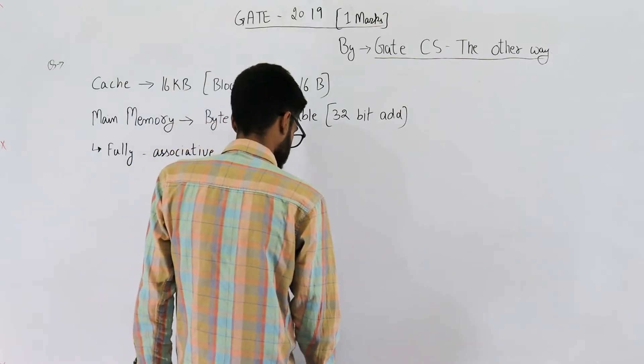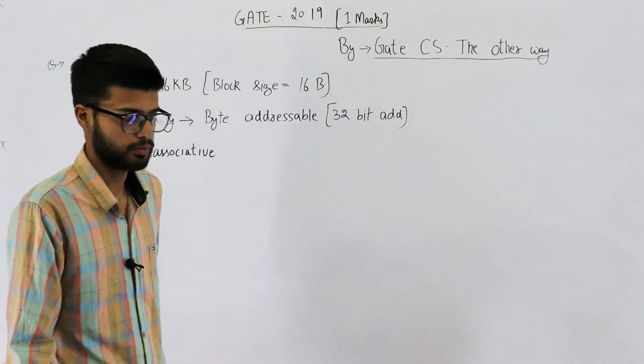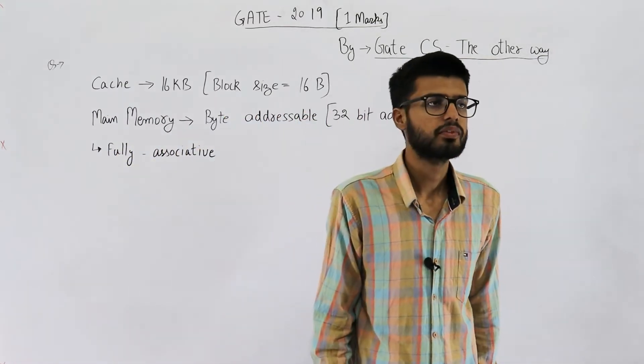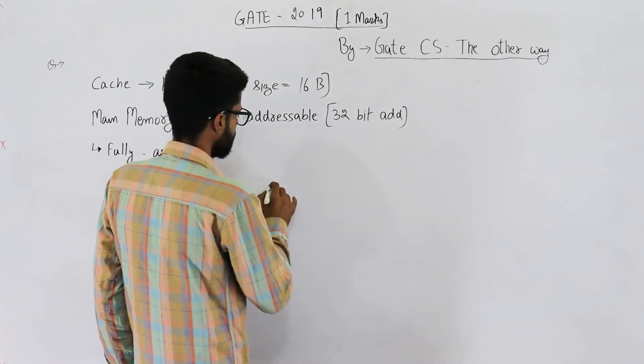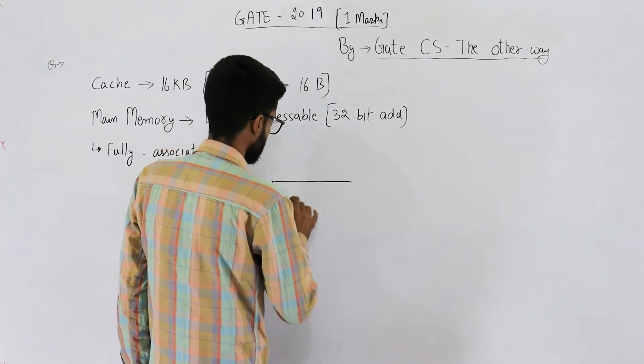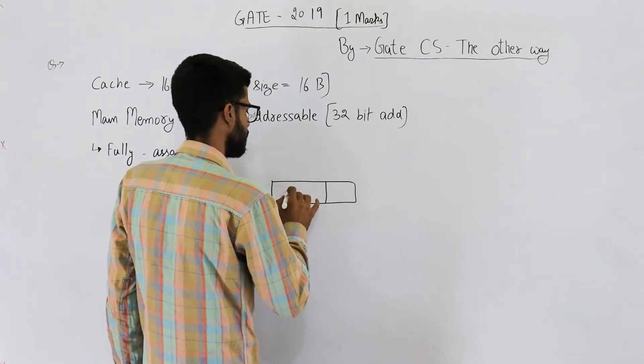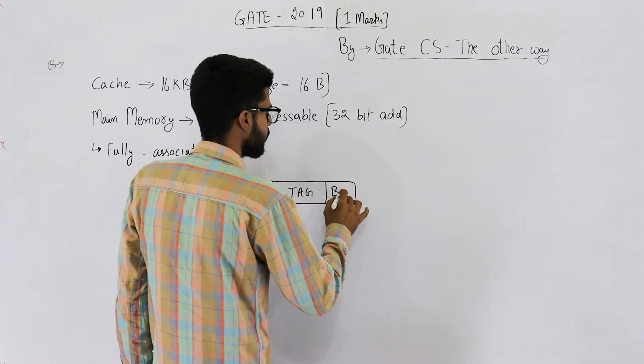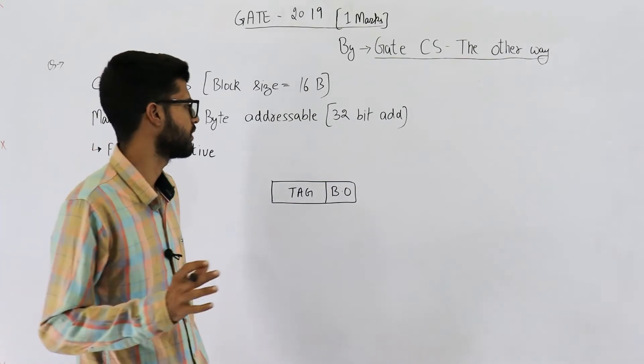So they're asking about the tag and index fields of a fully associative cache. Now you very well know in fully associative cache there is no index field. In fully associative cache we have the tag field and the block offset. There is no index field, no set field, no line number field whatsoever.